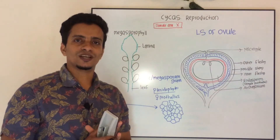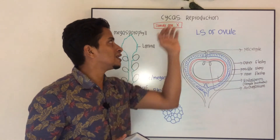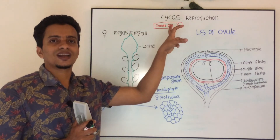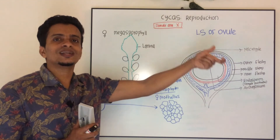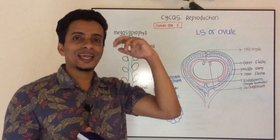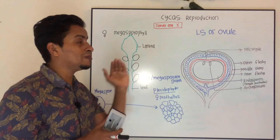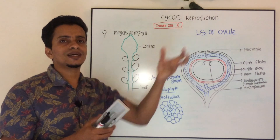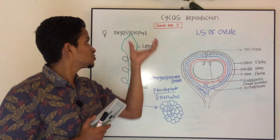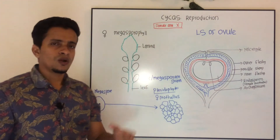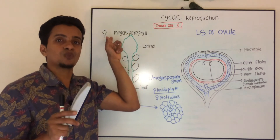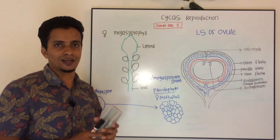Now let us discuss the megasporophylls and the female reproductive part of Cycas. Female cones are absent in Cycas. Instead, you can see megasporophylls which are loosely arranged on the apex of the female Cycas plant. A megasporophyll represents a leaf which bears megasporangia — a leaf bearing megaspores is called a megasporophyll.